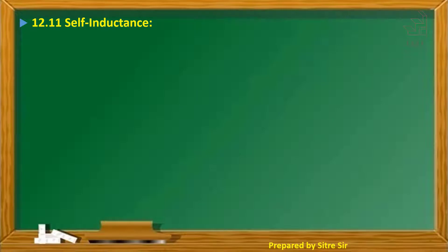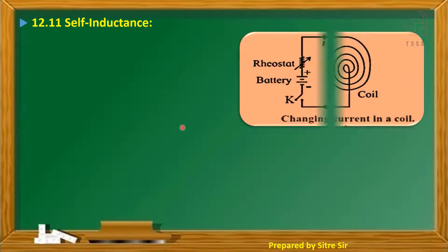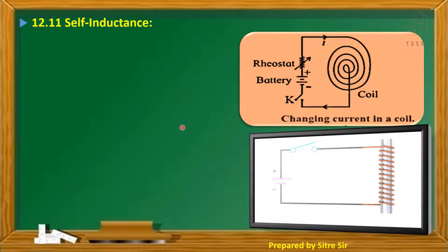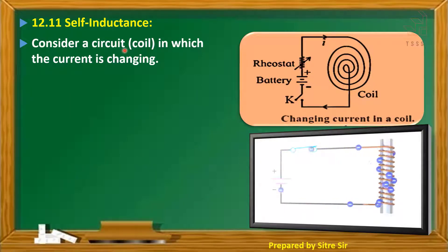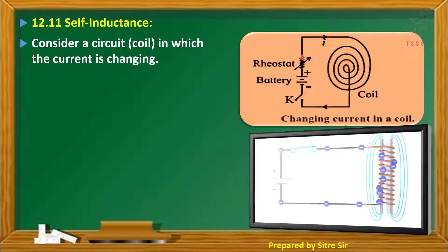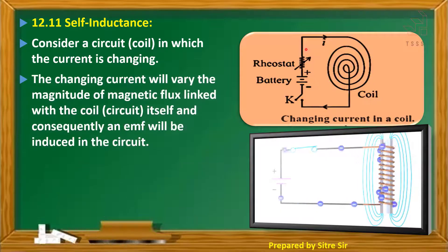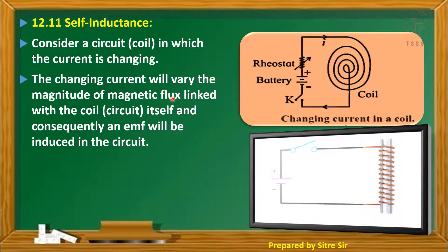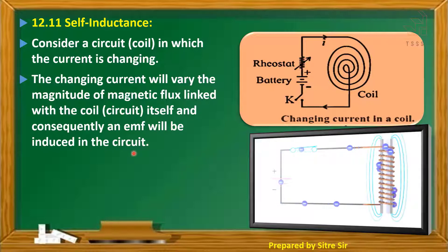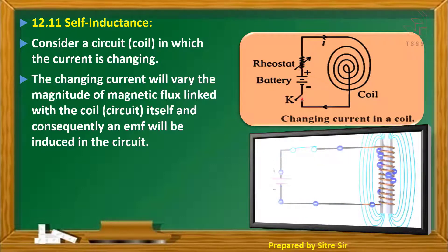Next one is self-induction. Consider a circuit that is a coil in which the current is changing. The changing current will vary the magnitude of magnetic flux linked with the coil — that is the circuit itself — and consequently an EMF will be induced in the circuit.